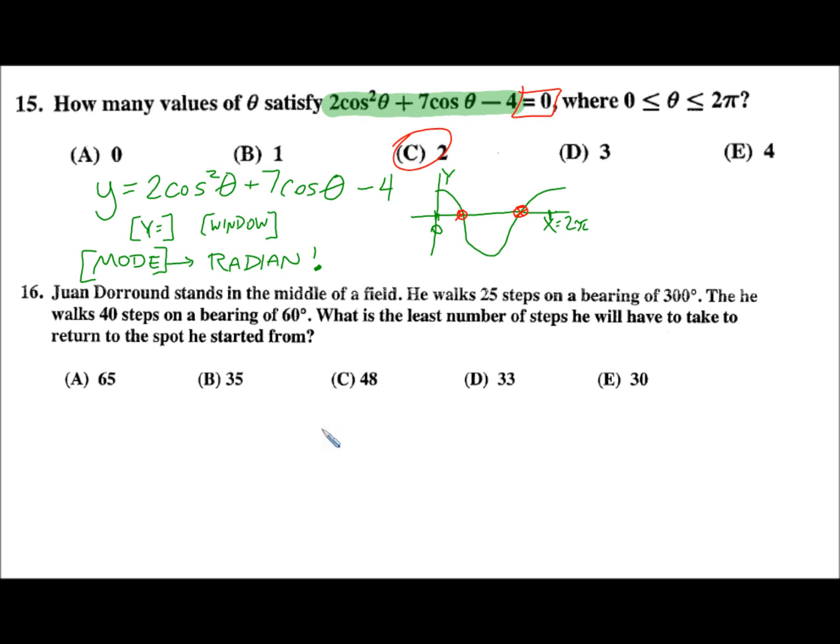Number 16, this is a navigation problem. Juan Duran, very clever name there, stands in the middle of the field. He walks 25 steps on a bearing of 300 degrees. Then he walks 40 steps on a bearing of 60 degrees. What's the least number of steps he will have to take to return to the spot he started from? The trick to this problem is the word bearing. When we're looking at bearing in a navigation problem, due north is 0 degrees.